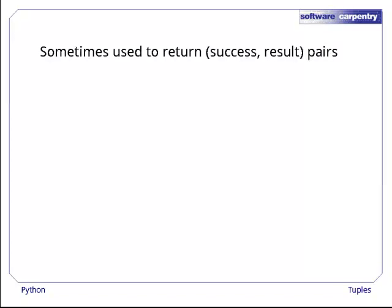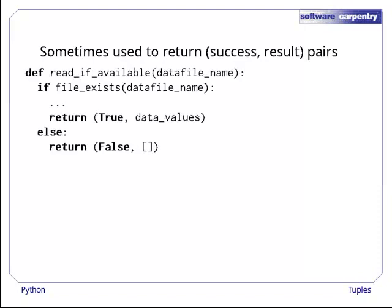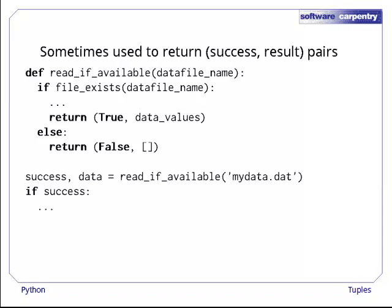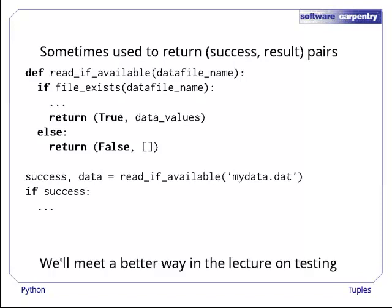Functions sometimes use this technique to return a success or failure flag along with their actual result, which is only valid if the flag indicates success. Here for example, read_if_available returns either true and a list of data values, or false and an empty list. Its caller can capture both values at once, then check the first to learn whether the second is meaningful or not. We'll meet a better way to do this kind of thing in the lecture on testing.